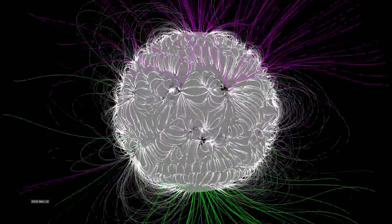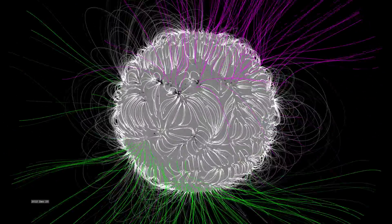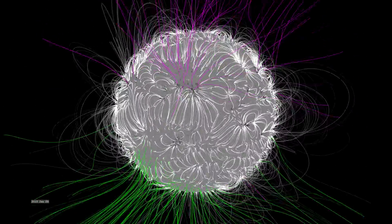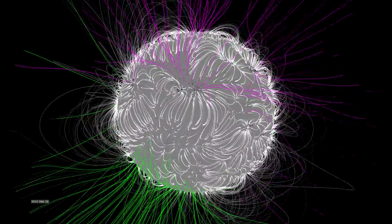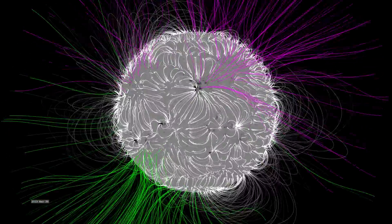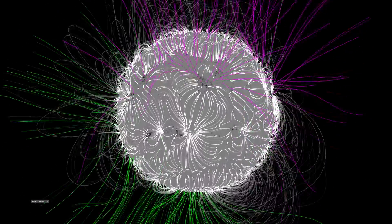Magnetic fields are everywhere in space, but we can only draw some of the lines that show the shape of the field near the Sun. As the magnetogram on the surface changes, so do the shapes of the lines. You may notice jumps in the field lines as they change in time. This visualization shows four years of the Sun's magnetic field.